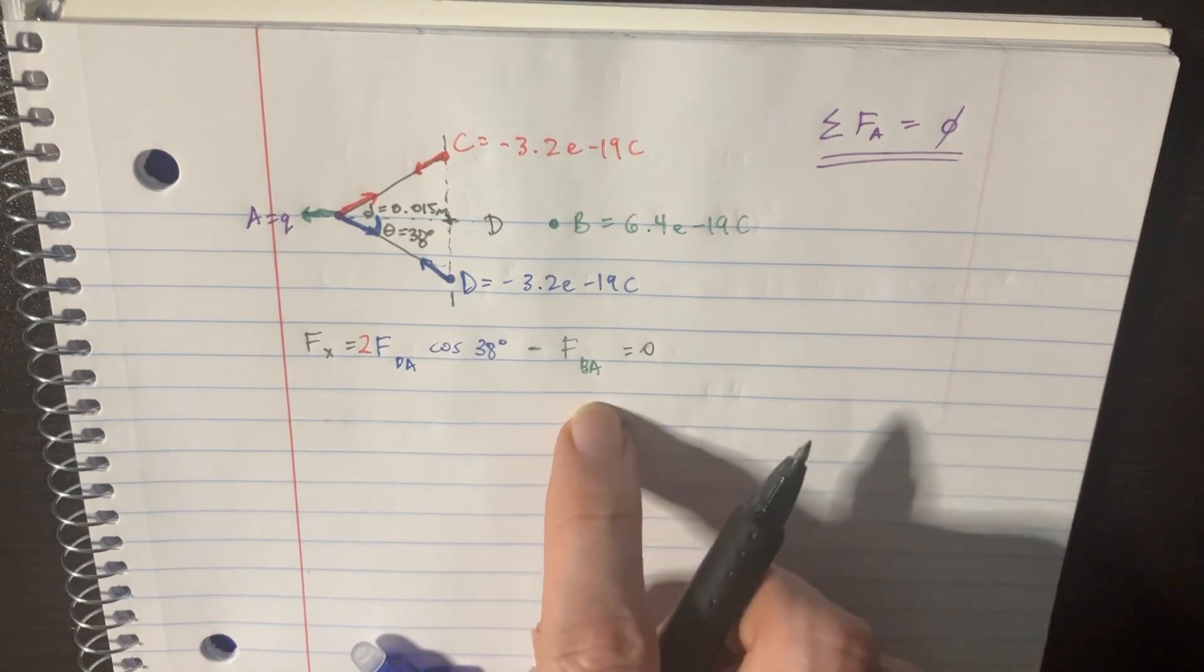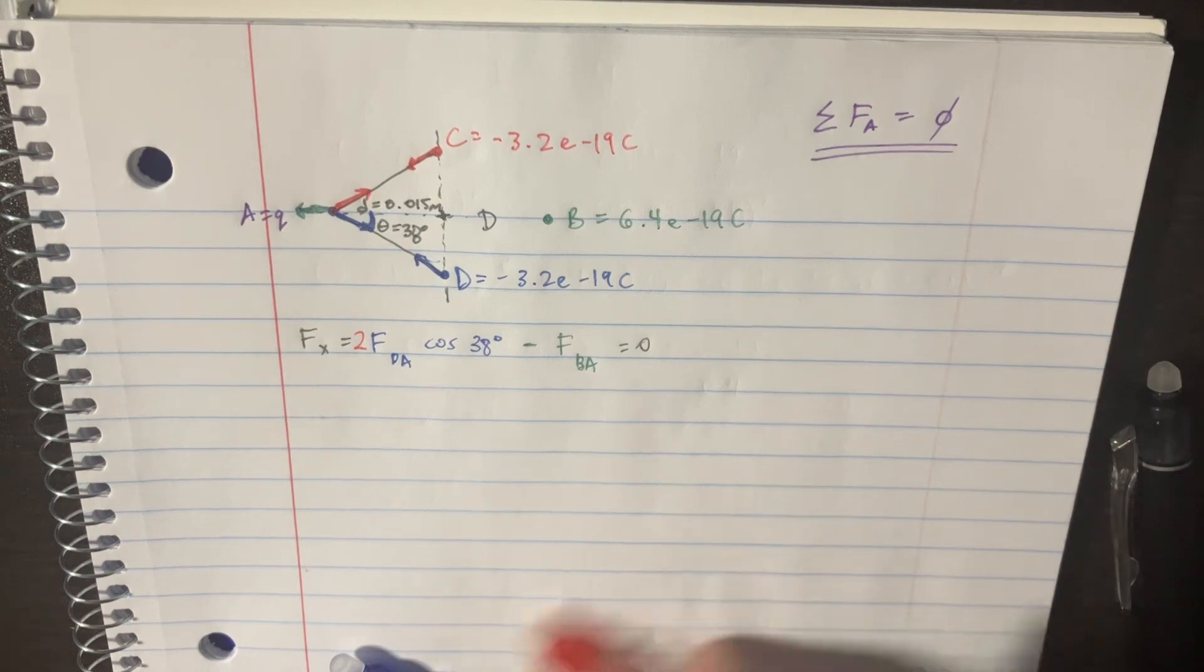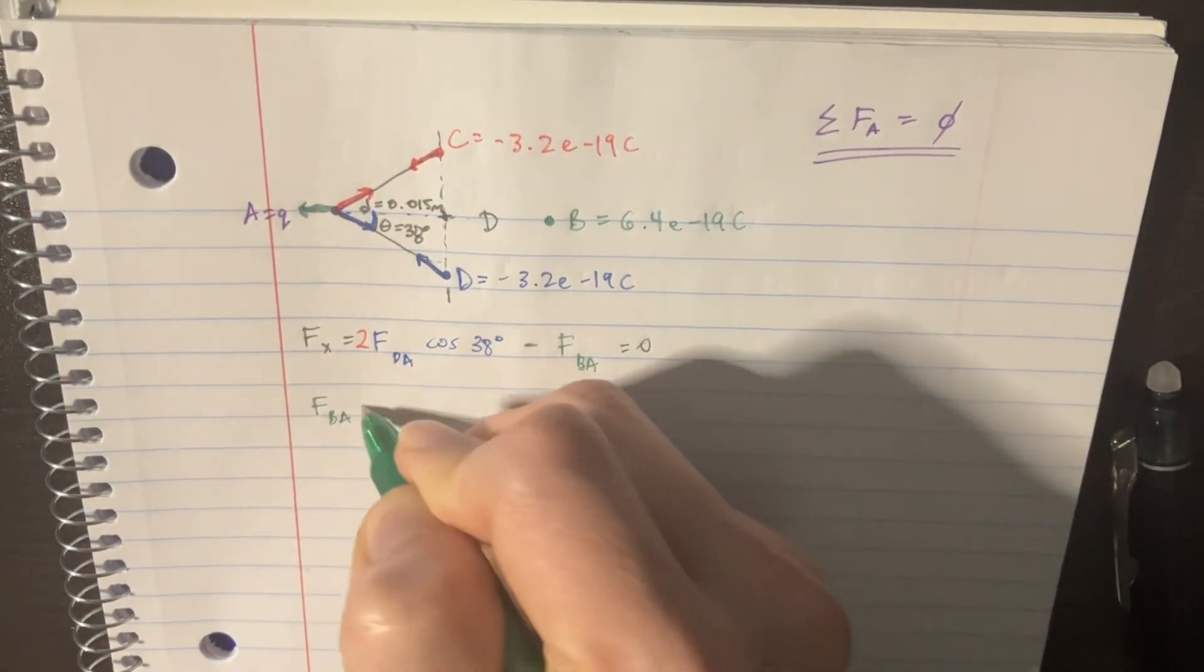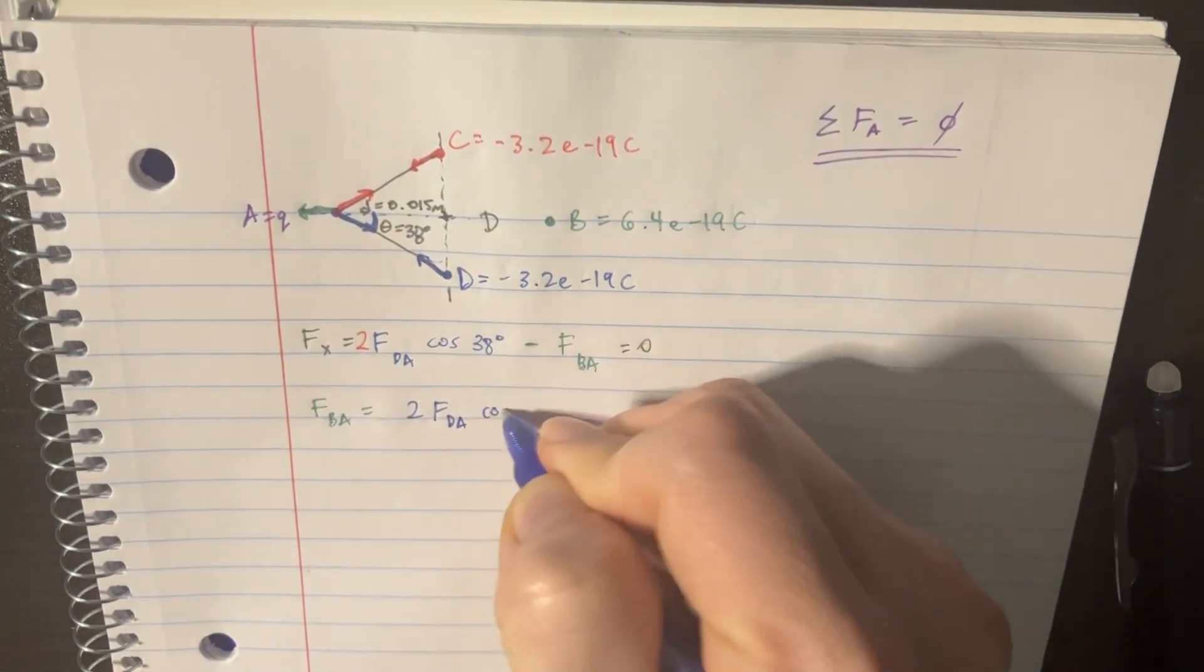So we can clearly see that FBA is equal to double that. So we can even sort of set that. Let's put it in the next thing here. FBA is just equal to two times FDA cosine 38.